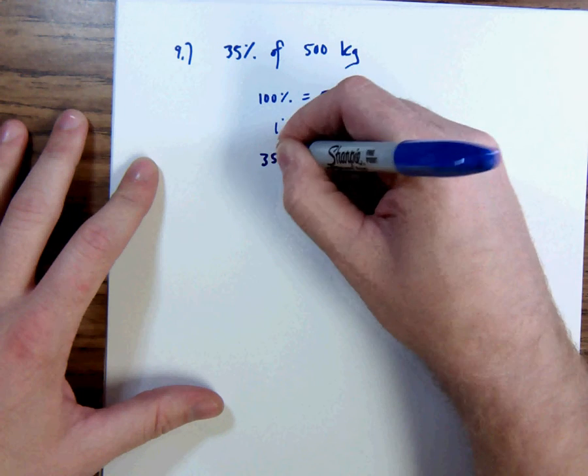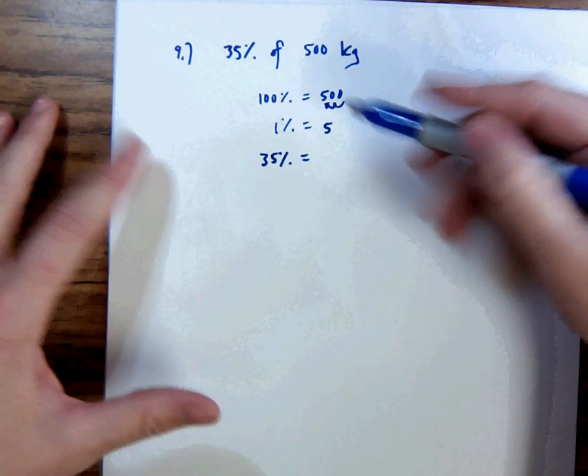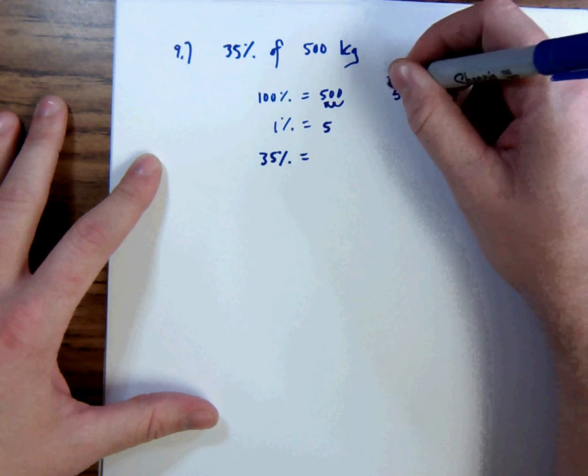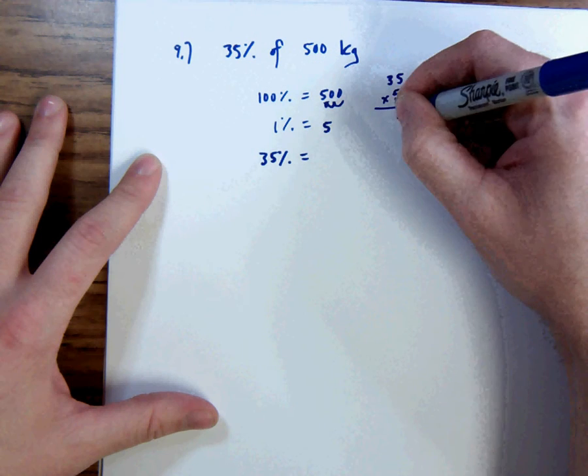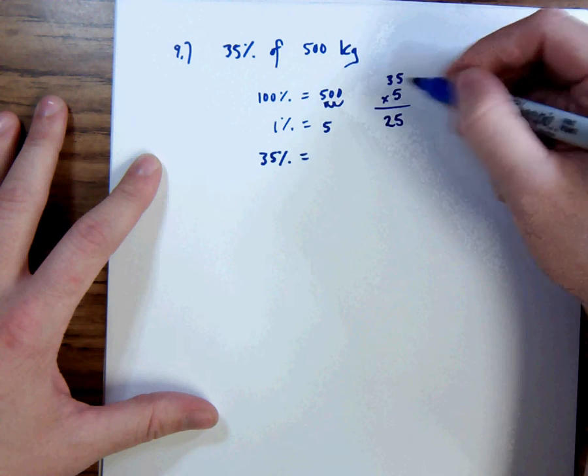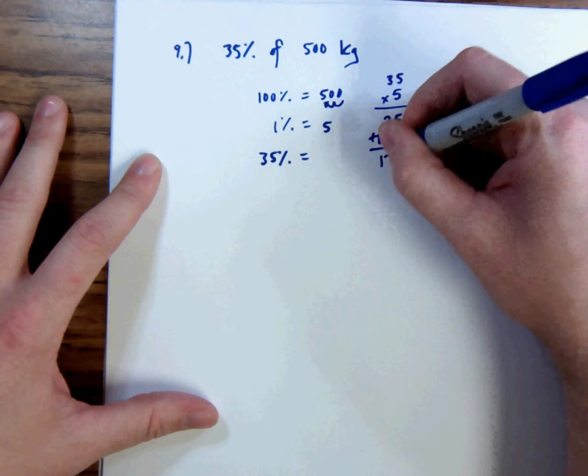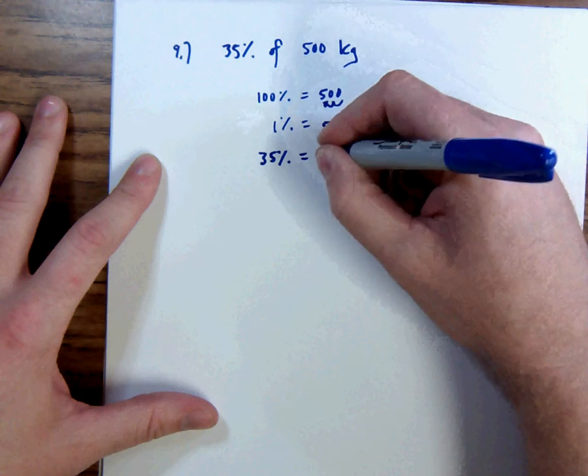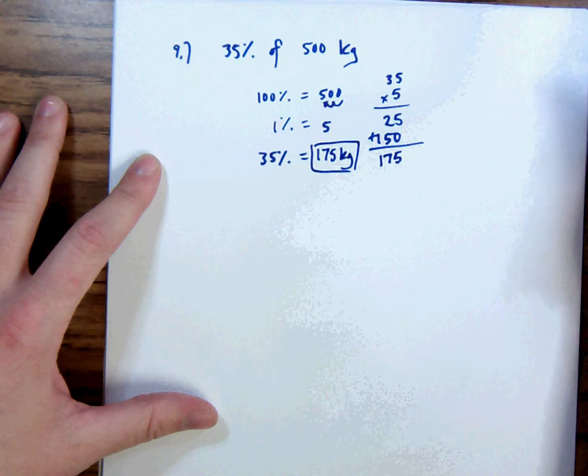And then of course 35%. To go from 1 to 35, we would have to multiply by 35. So we do the same thing here. We multiply 5 times 35. So 35 times 5. 5 times 5 is 25. 5 times 3 is 15, but that's technically 5 times 30. So 150. Add those together, I get 175. So 35% of 500 is 175 kilograms. Cannot forget our units.